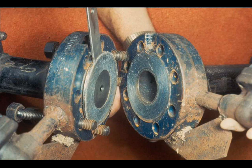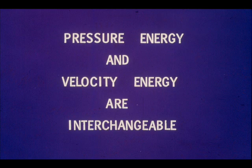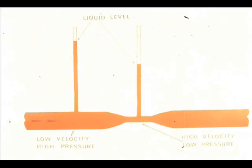The higher the pressure drop, the larger the flow. It is the pressure drop, or delta P, that is actually measured, but the flow can then be calculated. Since the orifice opening is smaller than the pipe, the velocity through the orifice is higher. In the module on fluid flow, we talked about pressure energy and velocity energy as being interchangeable. A Venturi tube can be used to show this interchange: velocity is highest through the smallest part of the tube, and at this point the pressure is lowest. An increase in velocity energy results in a decrease in pressure energy.